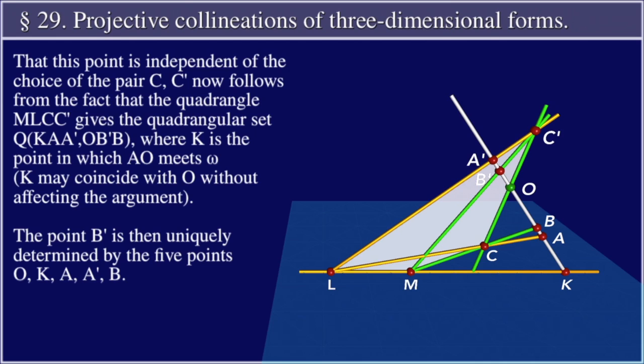The point B prime is then uniquely determined by the five points O, K, A, A prime, B.